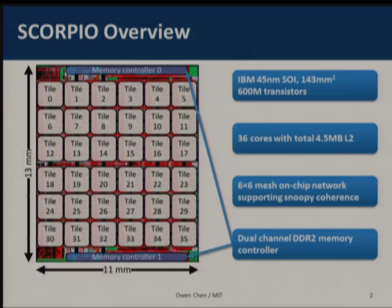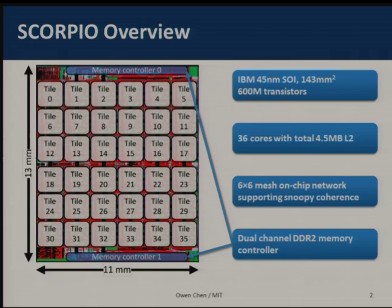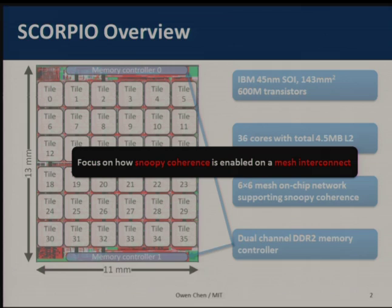The chip also has two memory controllers on two sides that talk to off-chip memory. Snoopy coherence is generally implemented with older interconnects such as buses or rings, but these do not scale well with high core counts, degrading overall performance. Other topologies like mesh networks provide better performance scaling, but are unordered in nature, which makes them unusable for Snoopy coherence. In this presentation, I will explain how we enable Snoopy coherence on a mesh interconnect. Our technique is not limited to mesh networks and can be applied to other topologies as well.